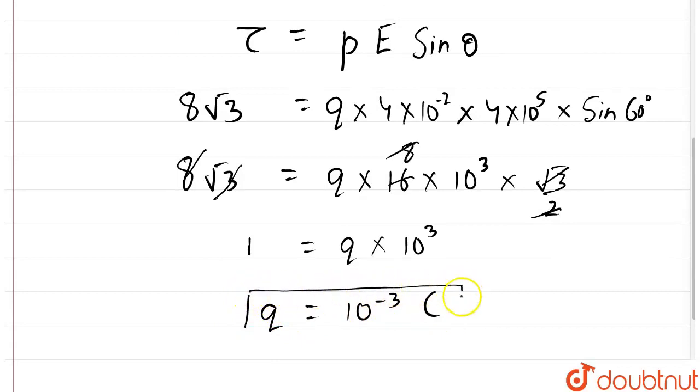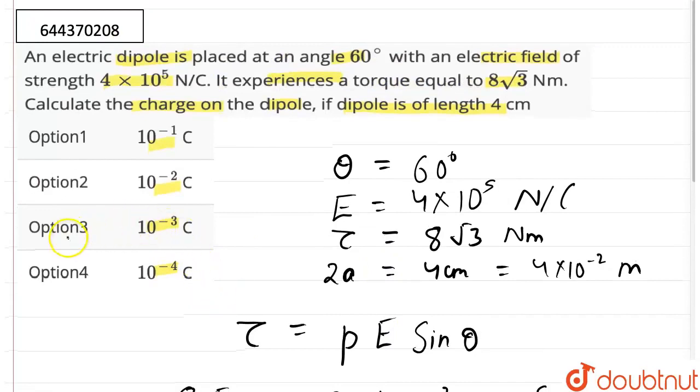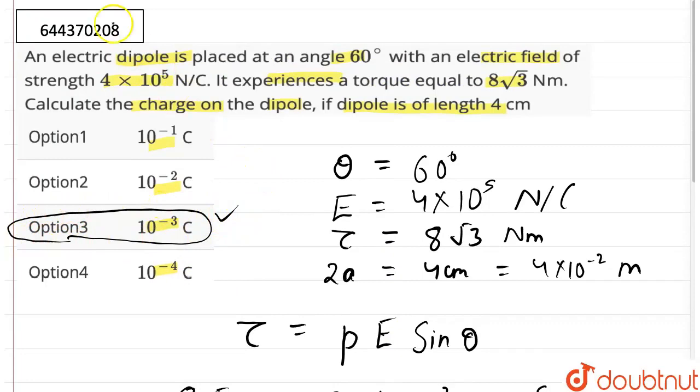This is the charge on the dipole 10^-3 coulombs. So, our option 3 would be the correct answer. This is our correct answer. Thank you.